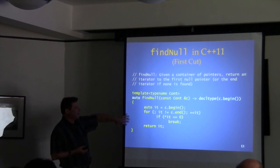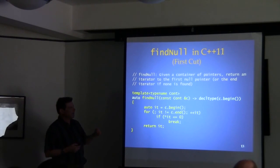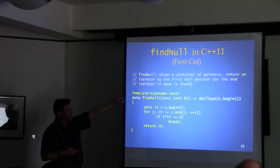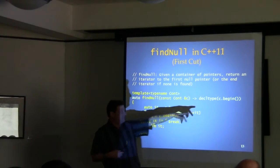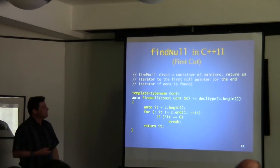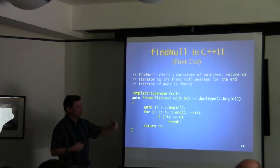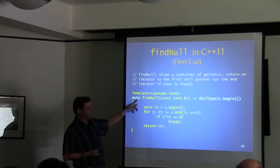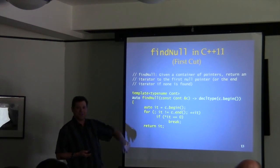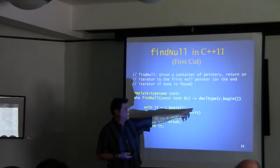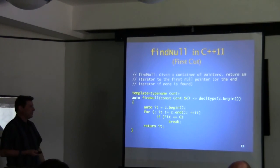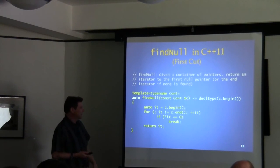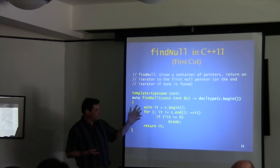Here's the first rewrite of the find_null function template in C++11 applying auto and trailing return type. What are we returning? An iterator. So we pick something with the type of the iterator: decltype(c.begin()). Quick sanity check: what type is actually returned? It'll be Container::const_iterator, because it's a const container — doing begin() on a const container gives a const_iterator. Then we go through the same logic as before using auto.